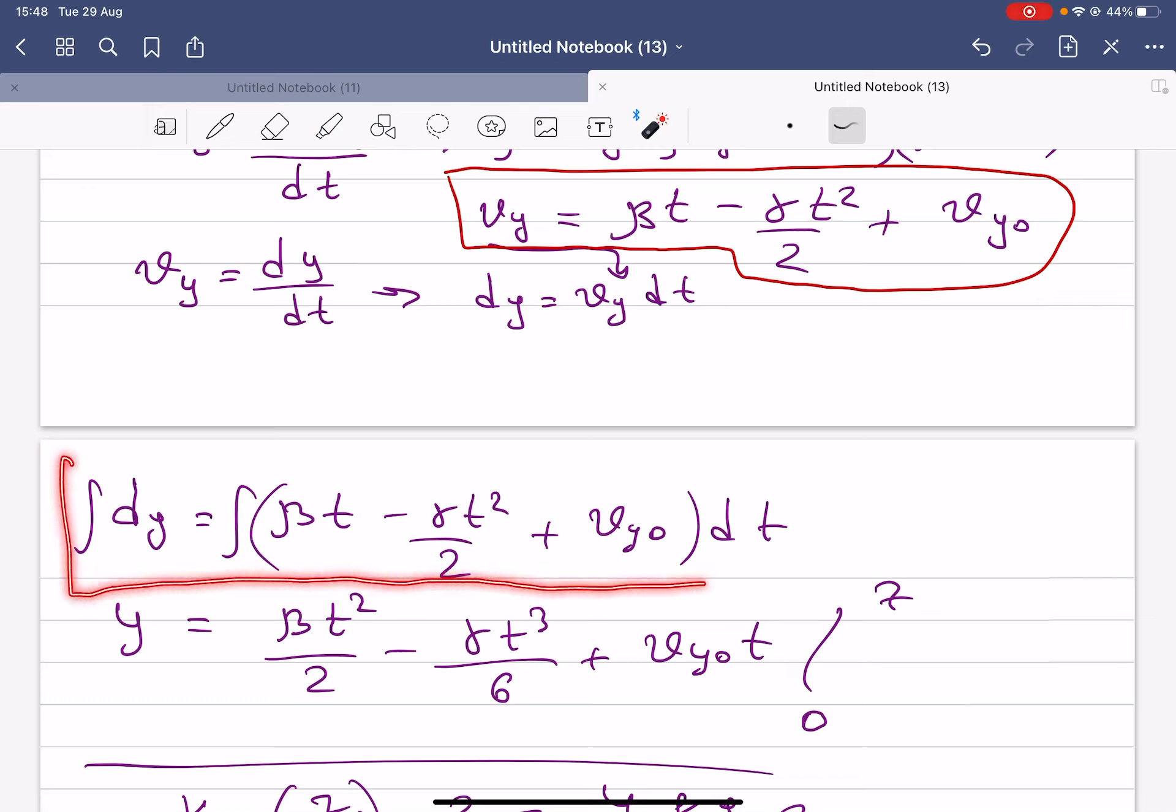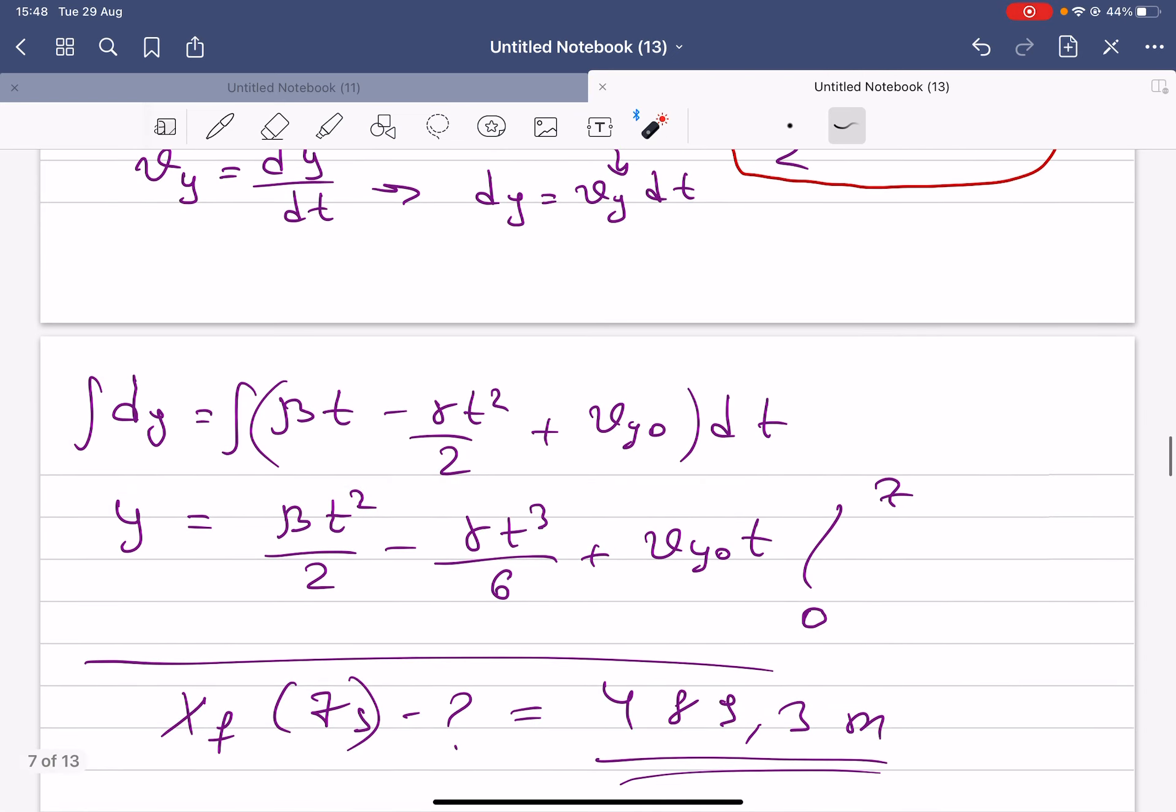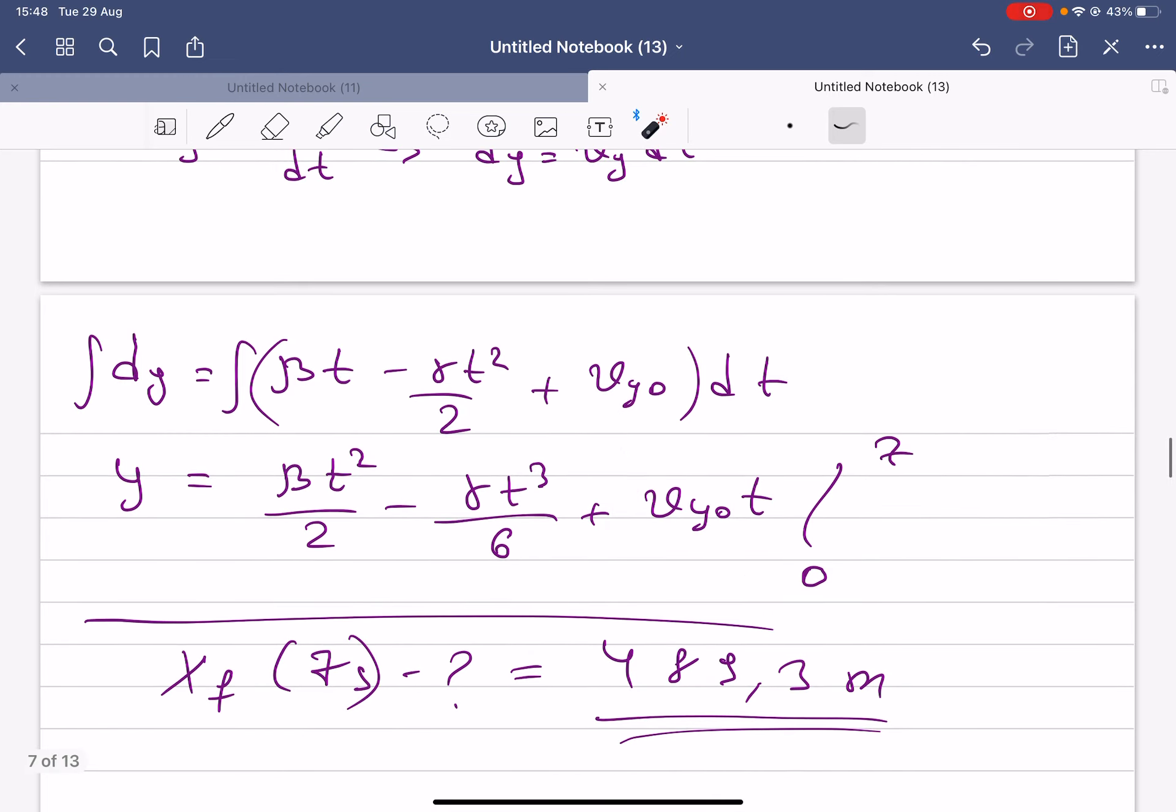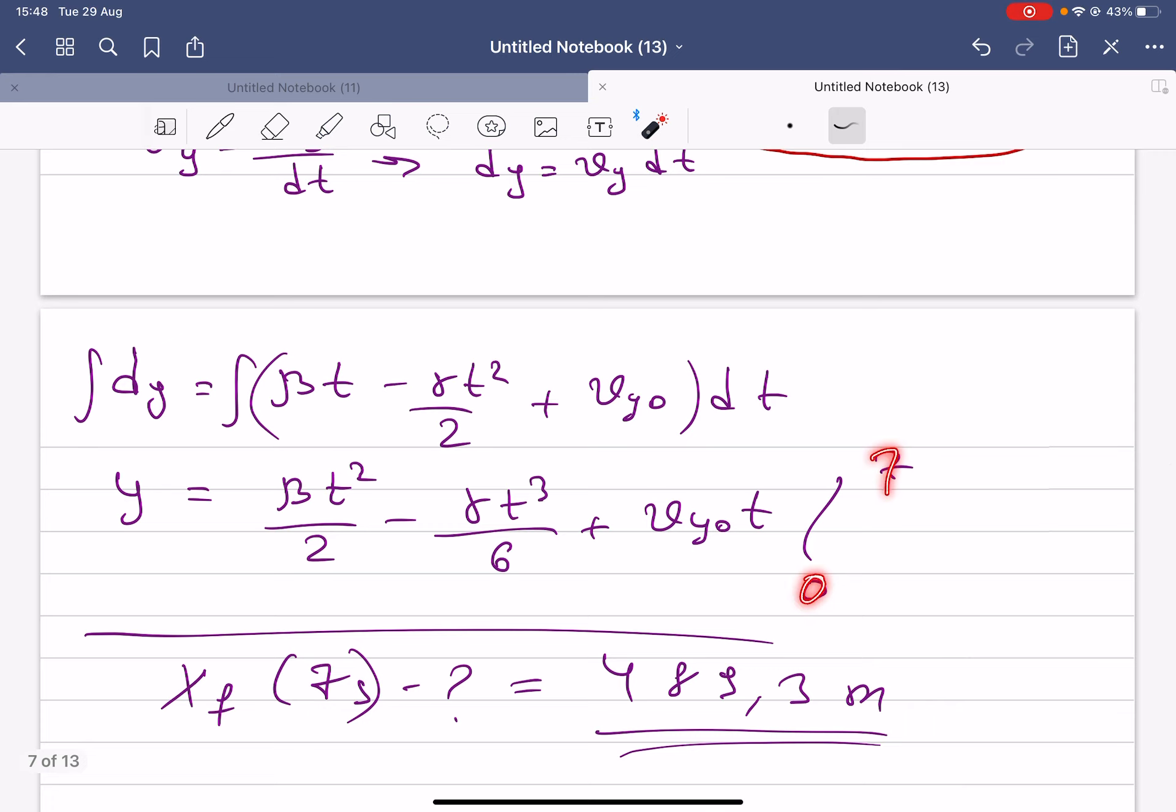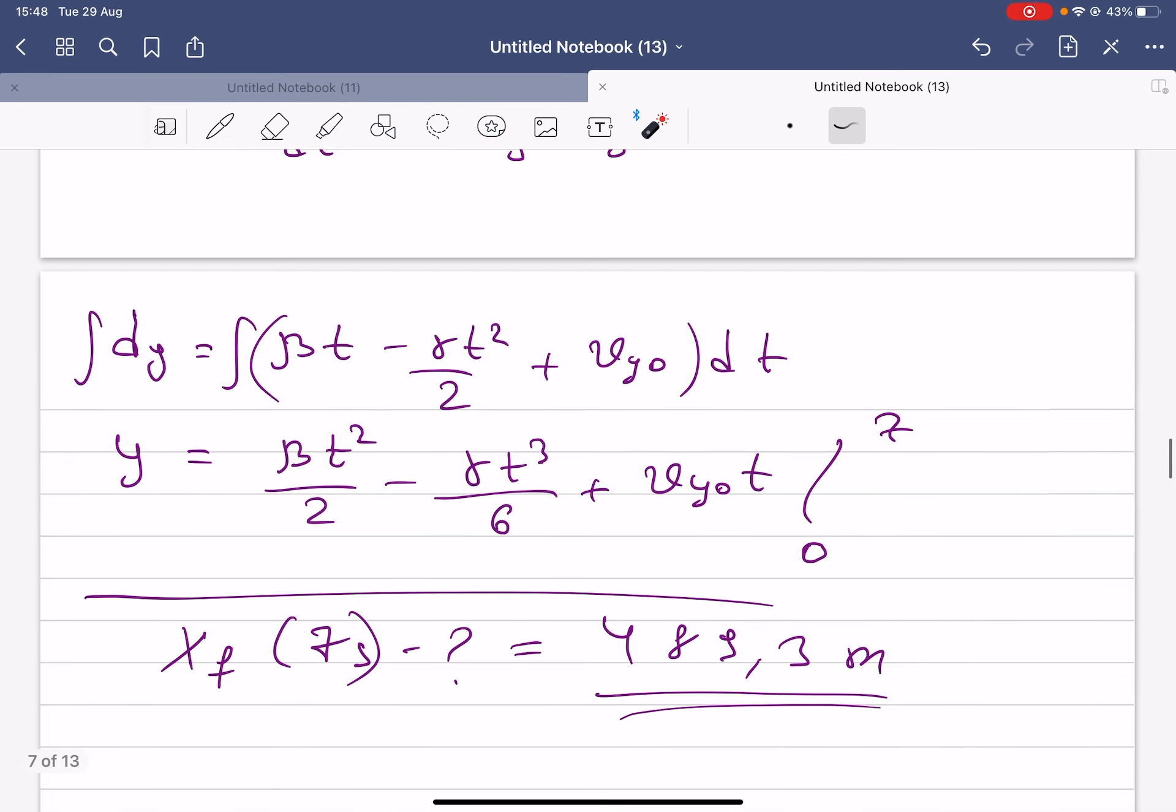After integration, dy gives you y, which is equal to beta t squared over 2 minus gamma t cubed divided by 6 plus vy initial times t.